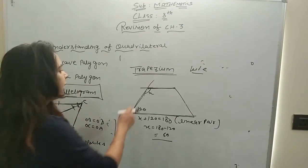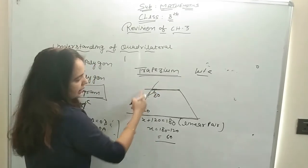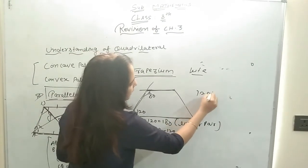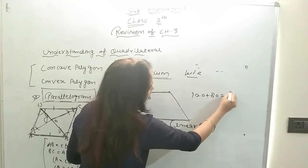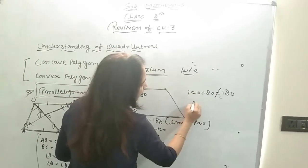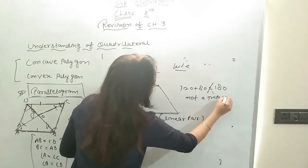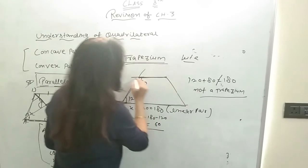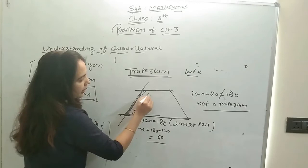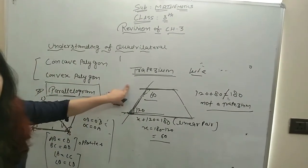The opposite side is also given. If this angle is 80°, and you are asked whether the given shape is a trapezium or not, then if 120 plus 80 equals 180, then it is a trapezium. If the sum is not 180, then it is not a trapezium. You have to check and confirm — the lines will be parallel only when their angle sum is 180°. So this angle would need to be 60° for it to be possible; otherwise, it is not possible. Have a good day.